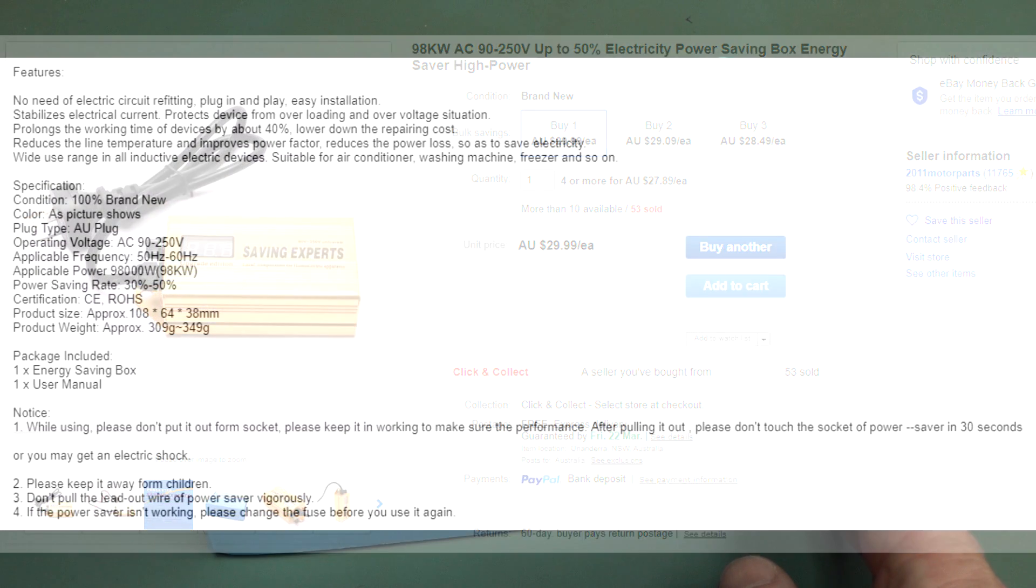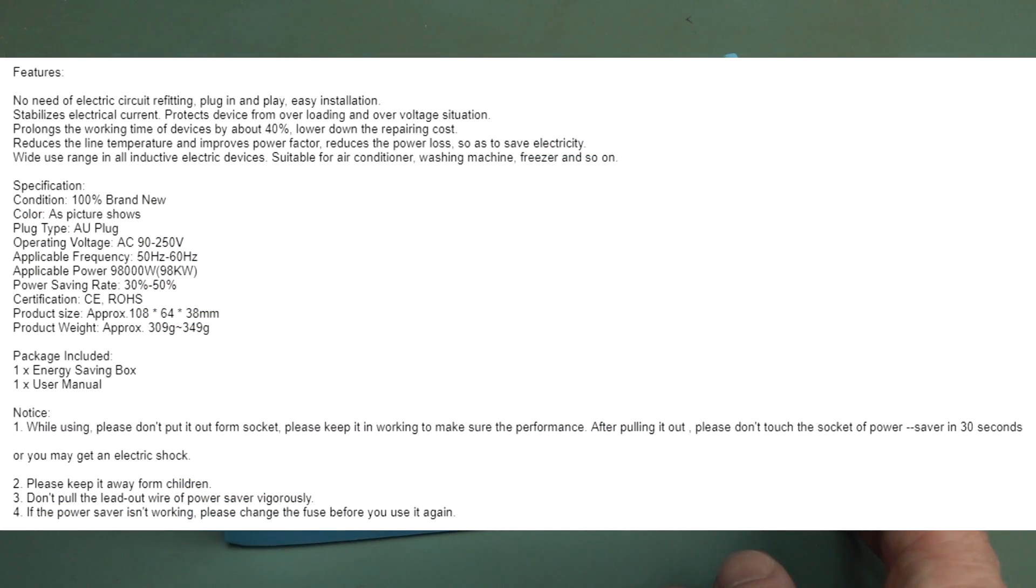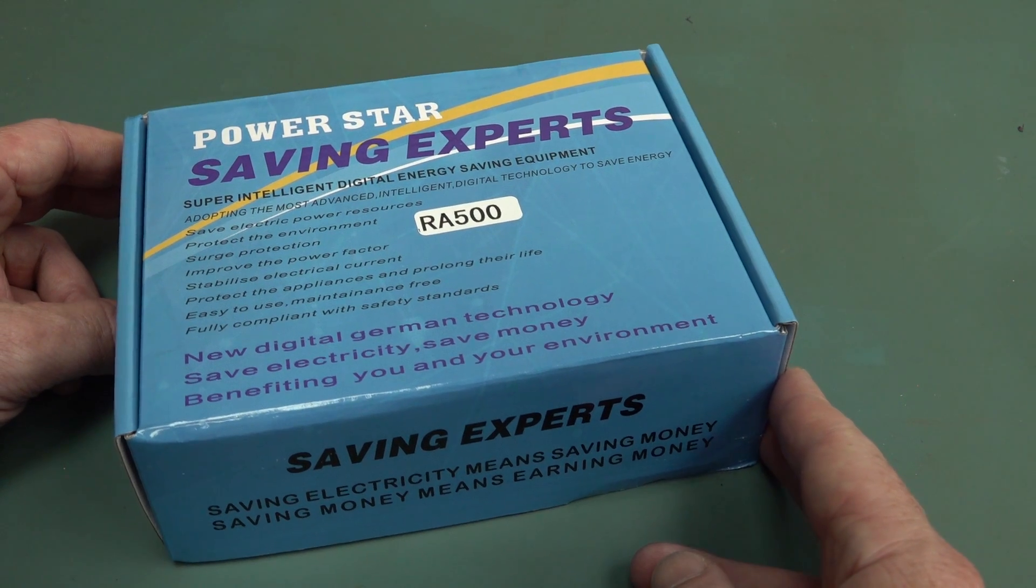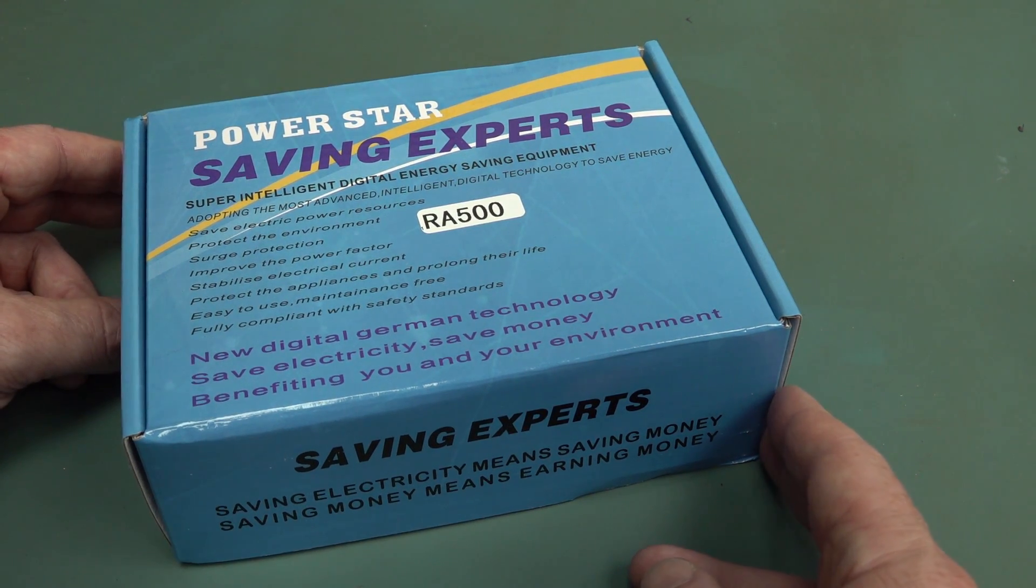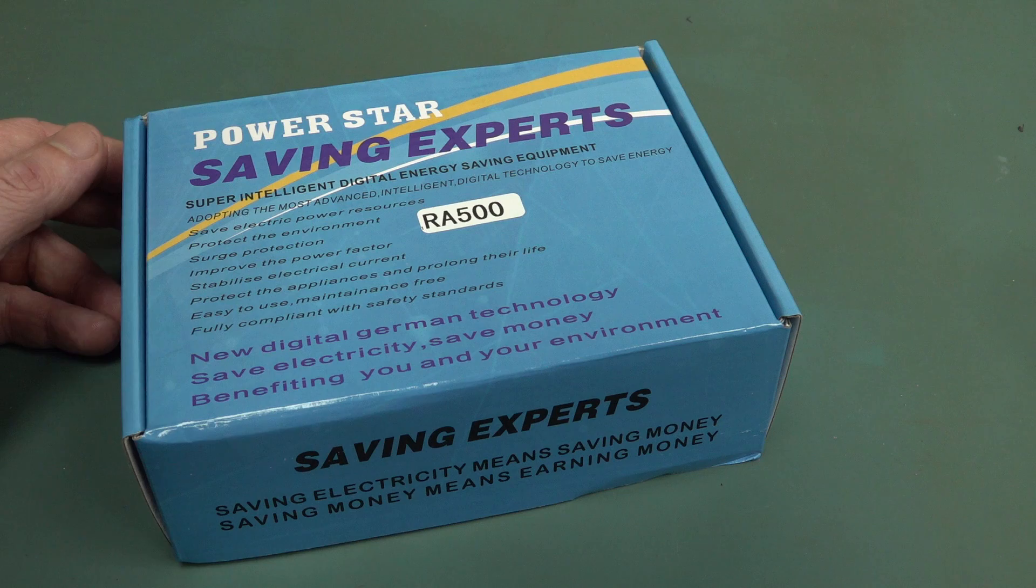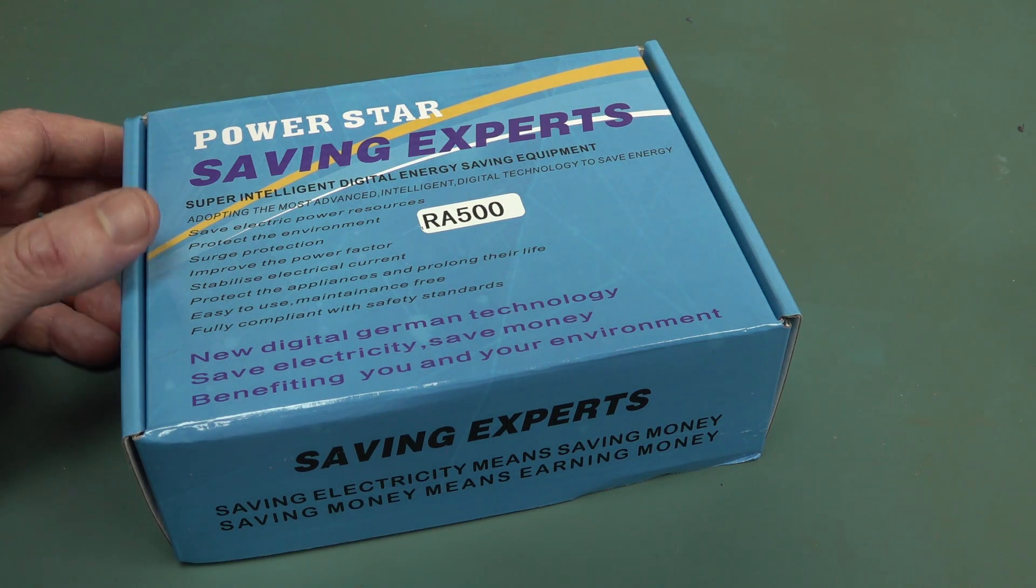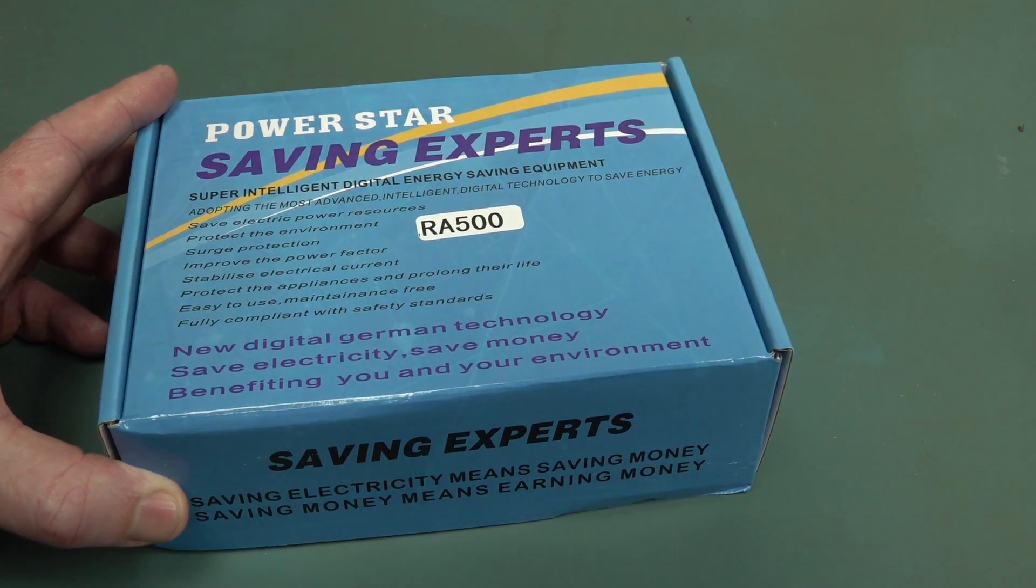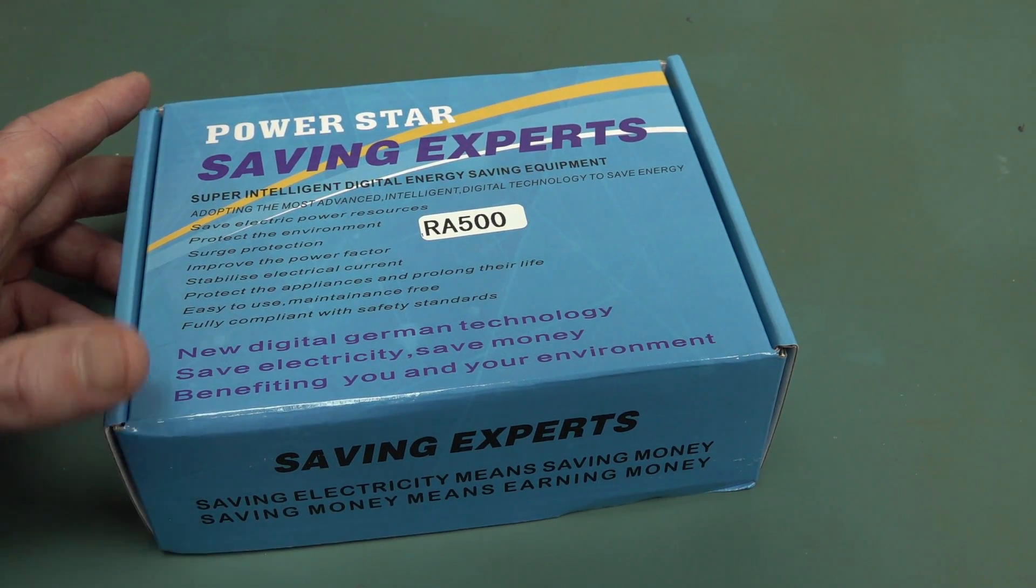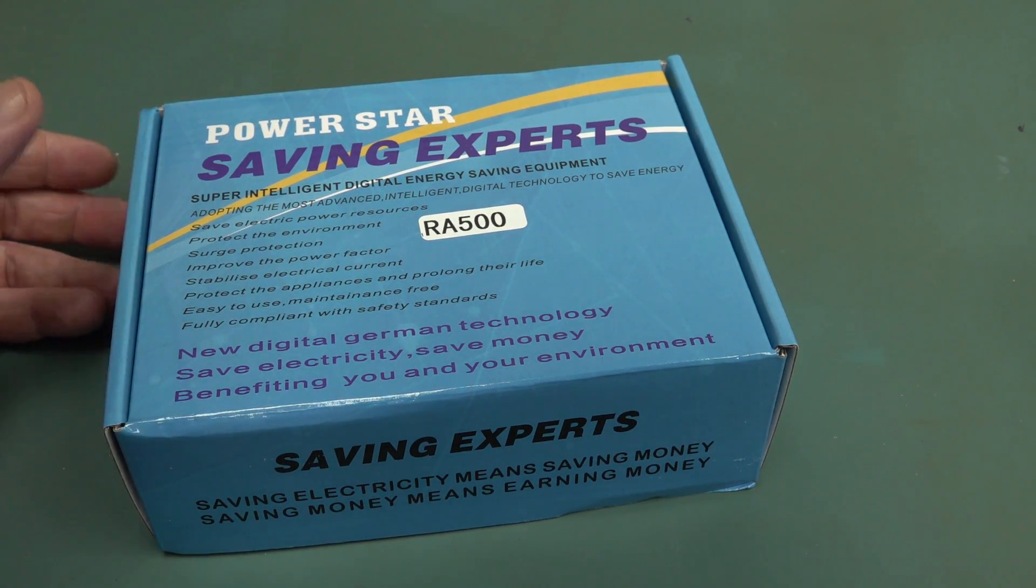30 bucks on eBay buys you this whiz-bang magical device that apparently saves you up to 50% on your power bills. And if it sounds familiar, it's because I've debunked a much simpler version of this before, which turned out to be just a power factor correction capacitor inside a box. I'll link the video down below and in the cards. That explains how those things are just absolutely BS and they don't do anything.